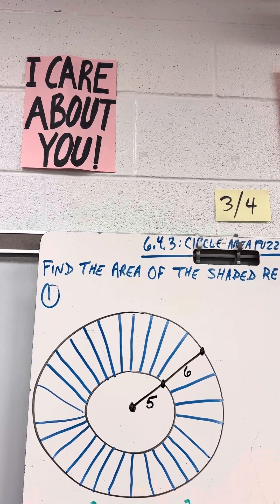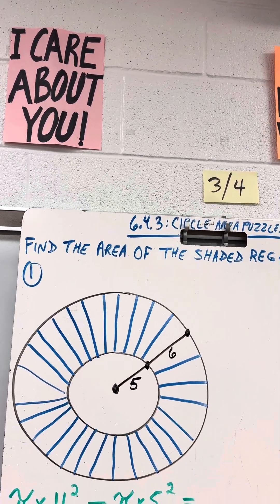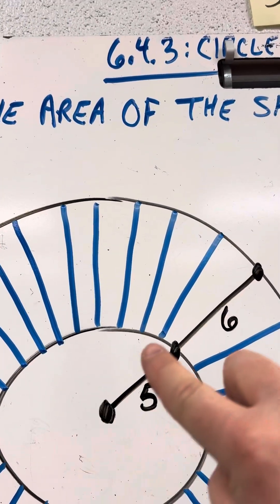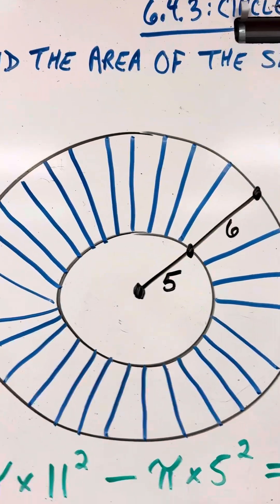To get the big circle radius, do you agree, is going to be 11 because we're going to take 5 plus 6 to get 11.